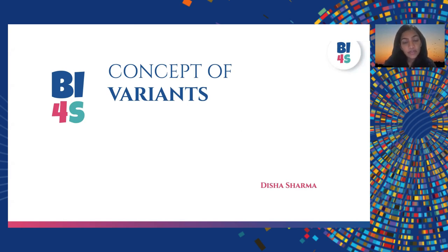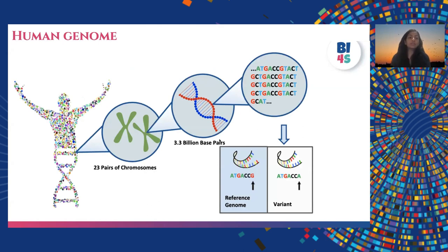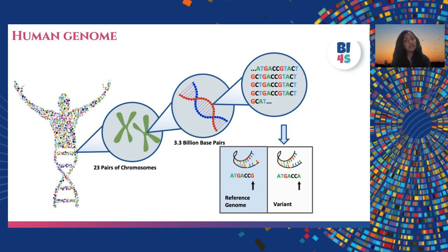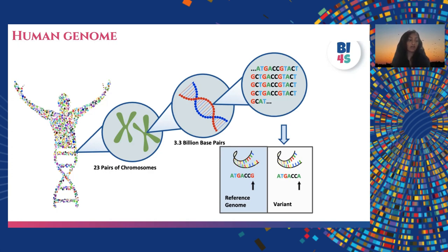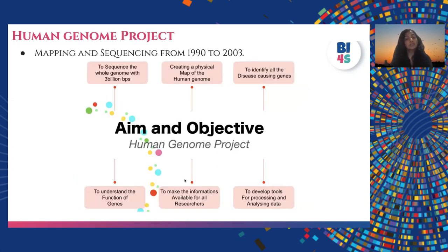Hello everybody. Today I would like to explain the concept of variants. As we all know, the human genome is comprised of 23 pairs of chromosomes, coded by 3.3 billion base pairs composed of A, T, C, and G. These 3.3 billion base pairs are represented in something called the reference genome, which I'll be explaining today, followed by what variations are, the different types of variations, and how they can cause disease.